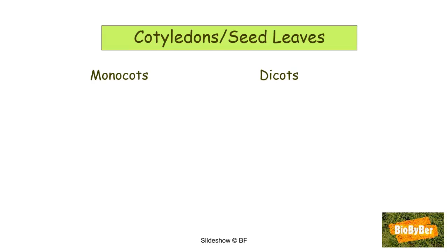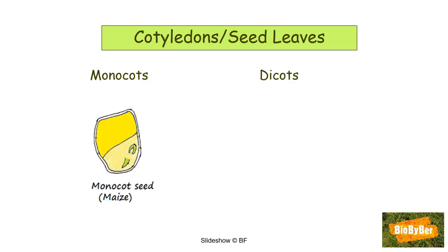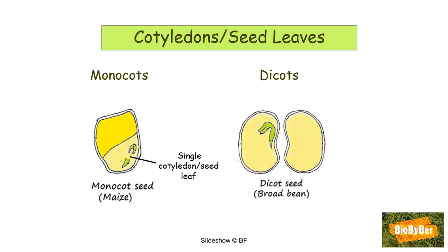Another difference between monocots and dicots can be seen in their cotyledons, or seed leaves. Monocotyledonous plants — for example the maize plant, or corn, like corn on the cob or popcorn corn — are monocot seeds; they only have a single cotyledon or seed leaf. Dicot plants have two cotyledons or two seed leaves: when you split a pea, bean, or peanut into two halves, each half is a cotyledon. 'Di' usually means two, so dicot plants have two cotyledons in their seeds.